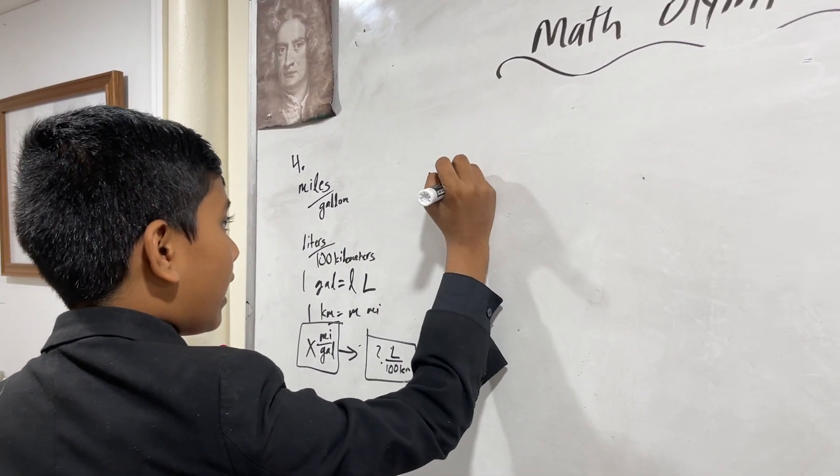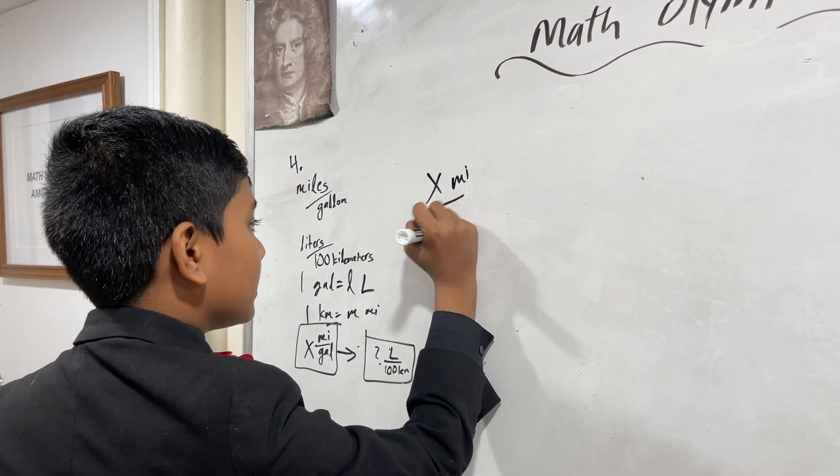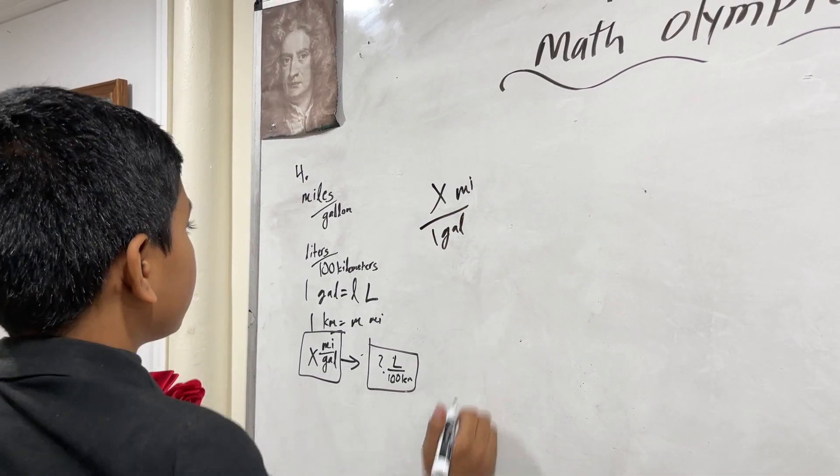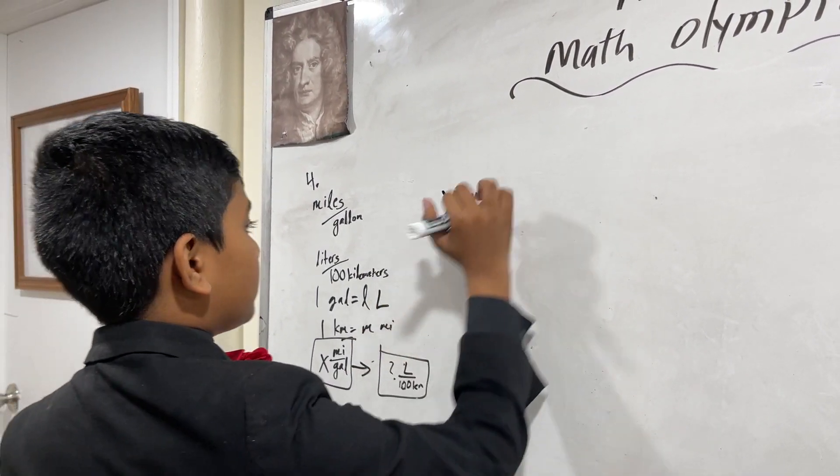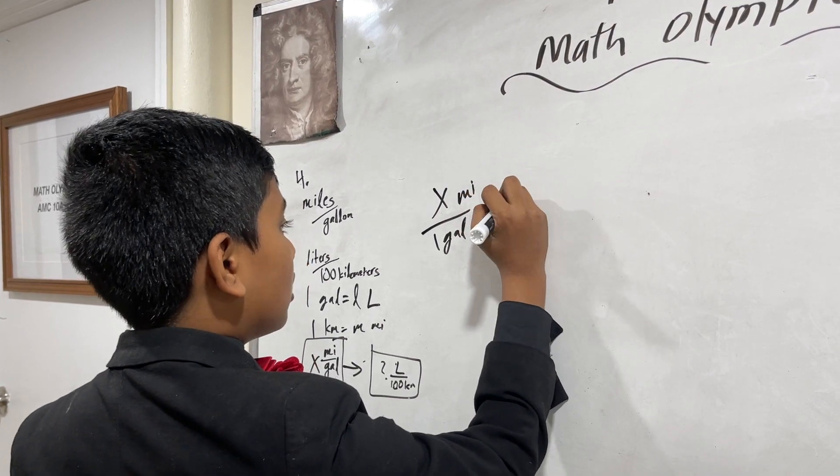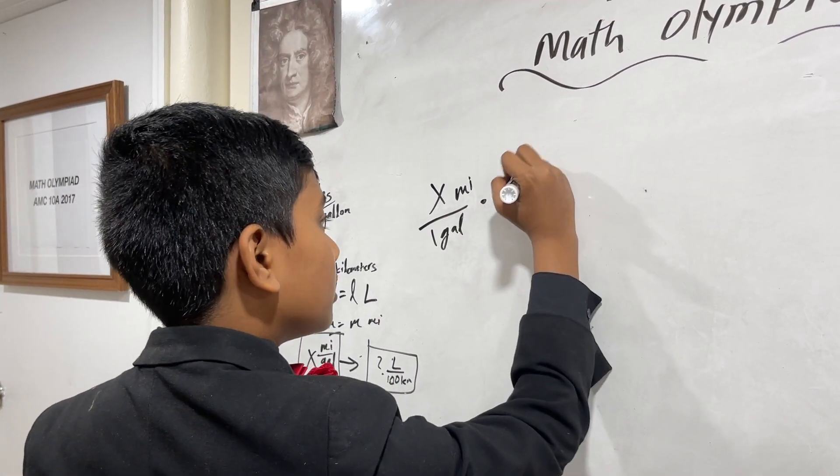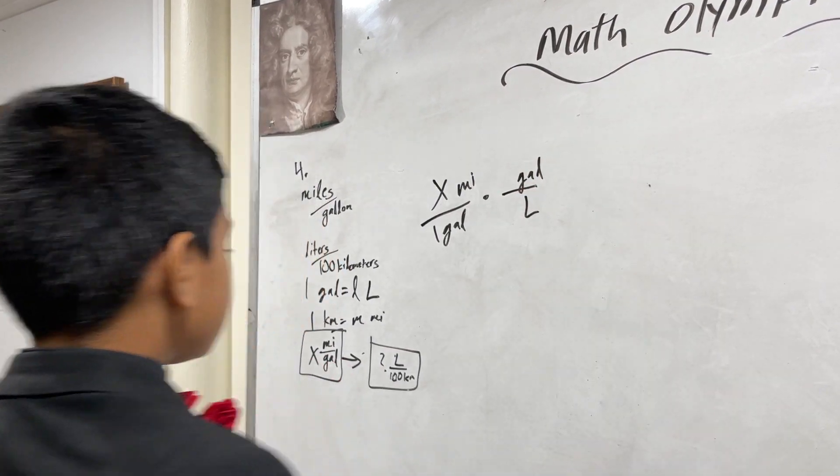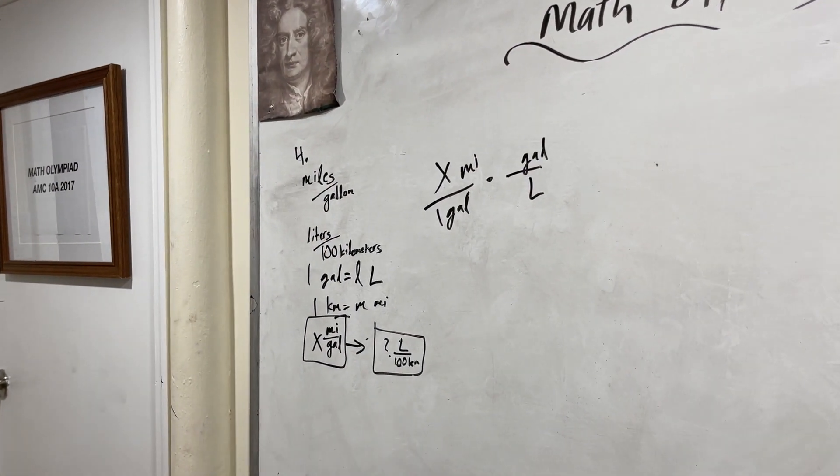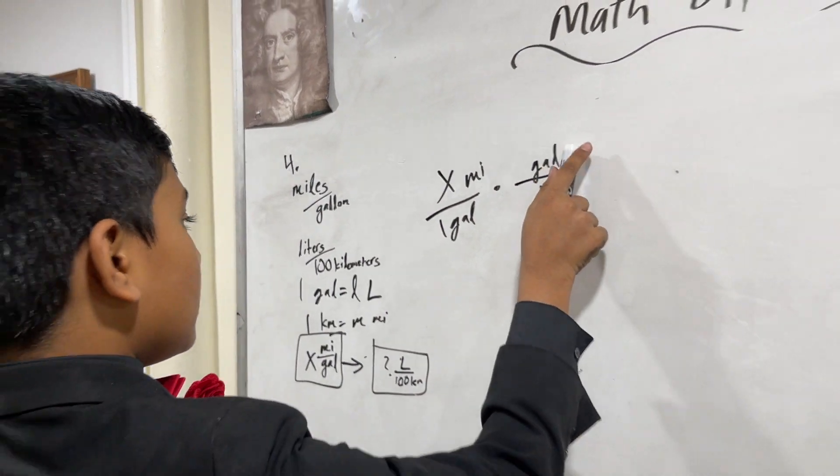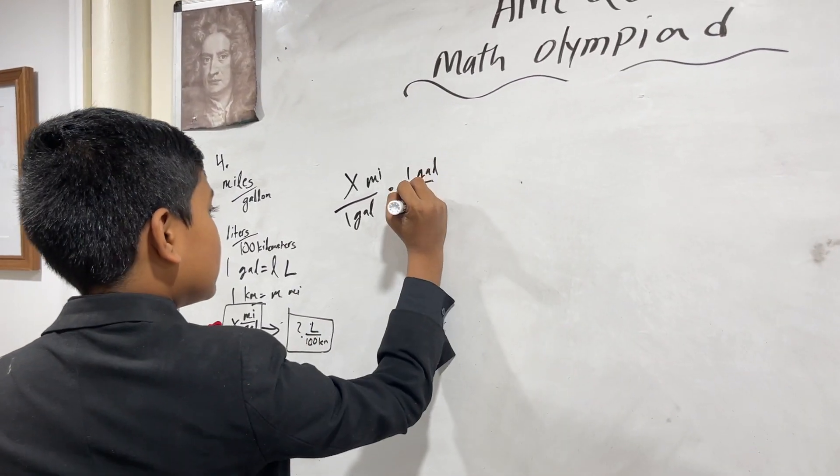So, we have X miles over one gallon. Now, we want to cancel out gallon and replace it with liters. So, we put gallon on top, liters on bottom.